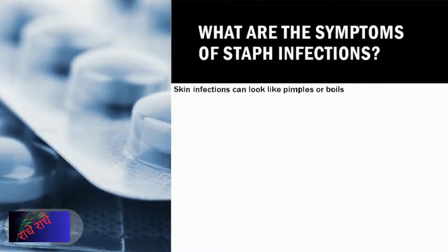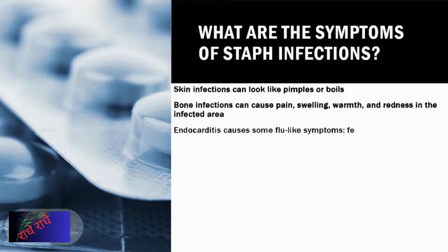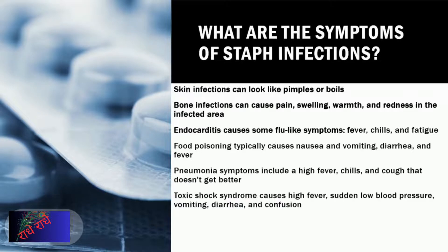Staphylococcal infections are caused by bacteria, leading to a variety of illnesses. Skin infections can manifest as pimples or boils, while bone infections show inflammation, pain, warmth and redness. Endocarditis results in flu-like symptoms such as fever, chills and fatigue. Food poisoning associated with Staph infections can cause nausea, vomiting, diarrhea and fever. Pneumonia, another Staph-caused illness, exhibits symptoms of high fever, chills and persistent cough. Toxic shock syndrome is further compounded by high fever, low blood pressure, vomiting, diarrhea and confusion.